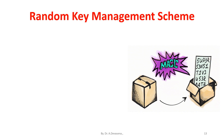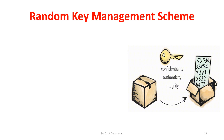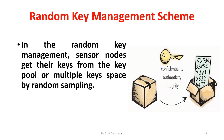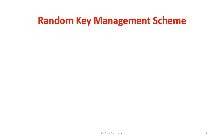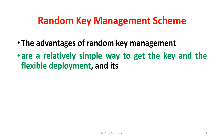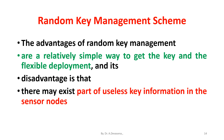In the random key management scheme, the sensor nodes get the keys from the key pool or multiple key spaces by random sampling. The advantages are that it is a relatively simple way to get the key and allows flexible deployment. Its disadvantage is that there may exist part of useless key information in the sensor nodes.